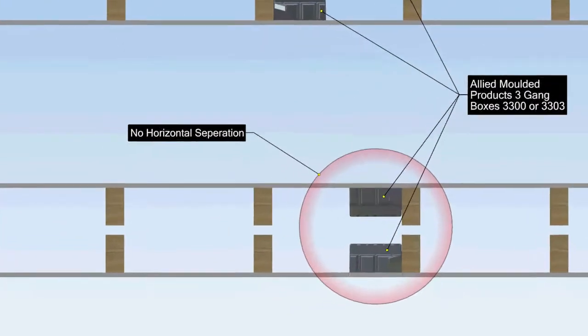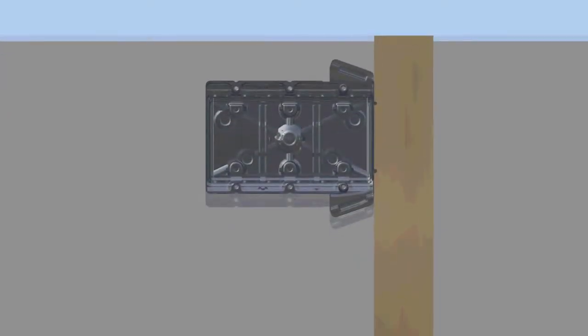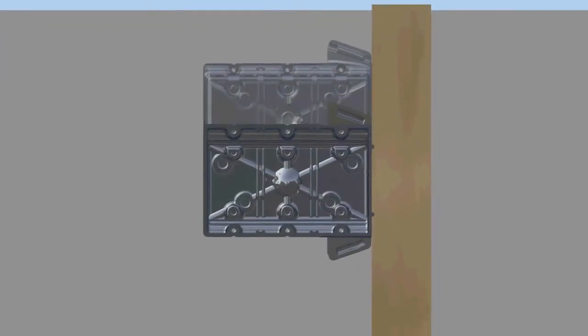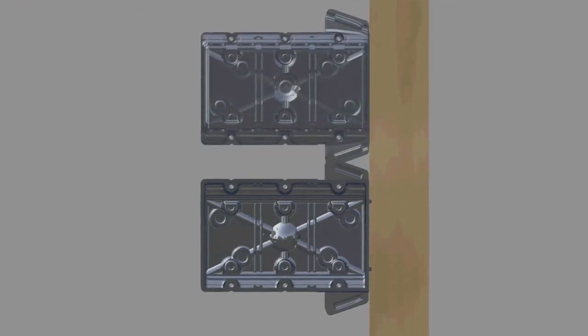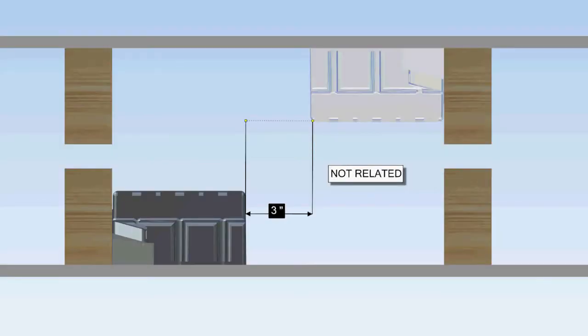The same rating for three-inch horizontal separation is not achieved when placing the boxes vertically of one another, which refers to the box location on the same side of the stud facing opposite directions. It's important to note three-inch vertical separation is not related to and does not hold the same rating as three inches of horizontal separation.